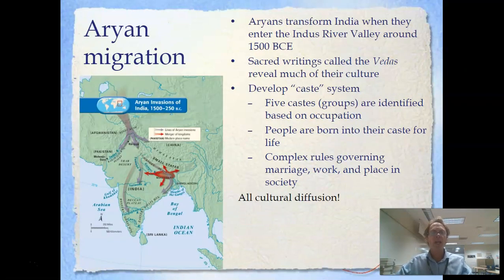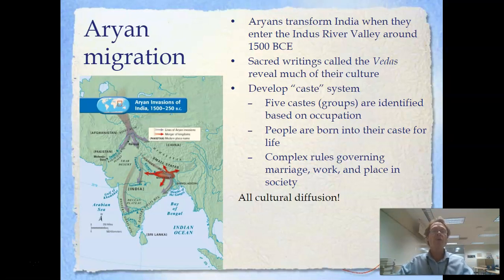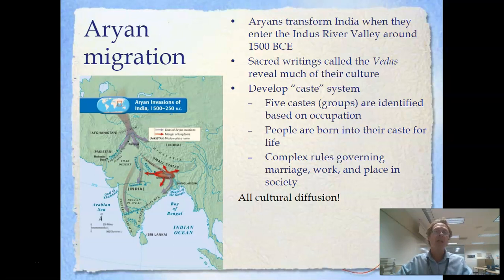We do know that a group of people called the Aryans migrated into the Indus River Valley — into what would be modern-day India — around 1500 BCE, about 3,500 years ago. These Aryan people transformed India through cultural diffusion, bringing their culture, their way of organizing society, and their religious beliefs. One evidence of cultural diffusion is religion: the Aryans brought sacred writings called the Vedas, which we were later able to decipher, revealing a great deal about their culture.